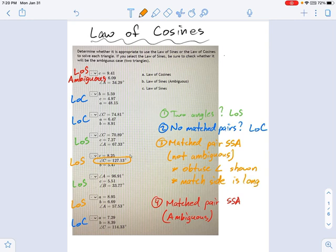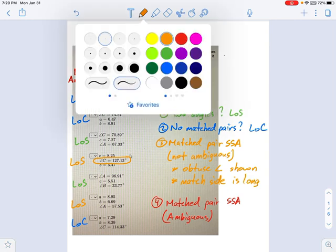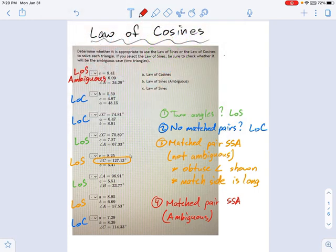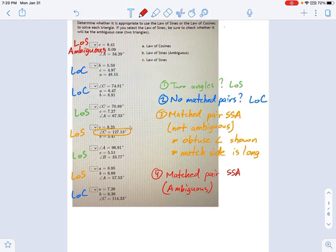Okay. That's a regular side-side-angle law of sines problem. Whereas this side-side-angle ambiguous case, that's only one scenario. That's an acute angle given and where the matched side is short.